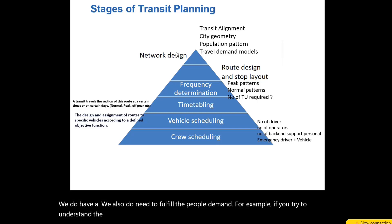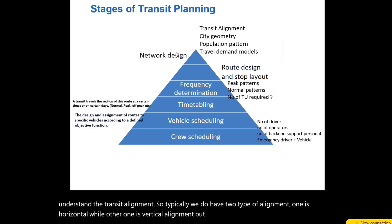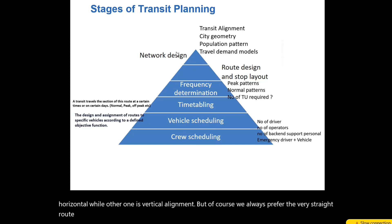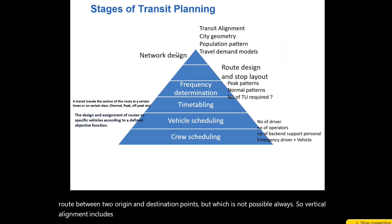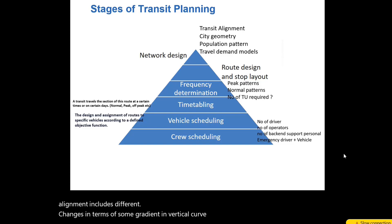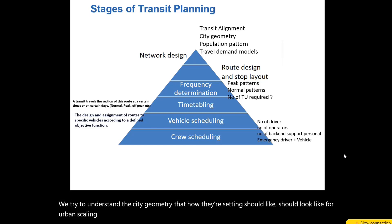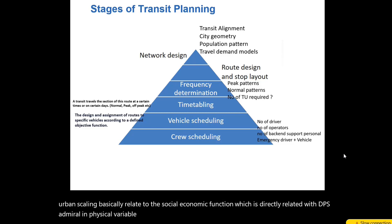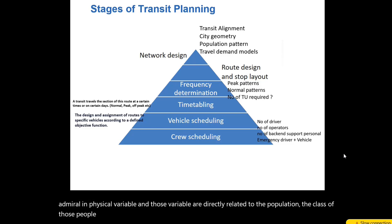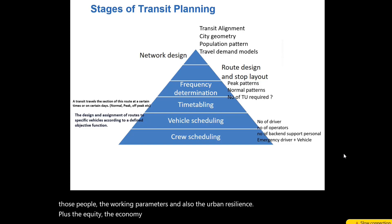If you try to understand transit alignment, we typically have two types: horizontal alignment and vertical alignment. We always prefer a very straight route between two origin and destination points, but that is not always possible. Vertical alignment includes changes in terms of gradient and vertical curves. When we understand city geometry, urban scaling basically relates to socioeconomic functions, which are directly related to behavioral and physical variables — population, class of people, working parameters, urban resilience, and the scale of the economy.